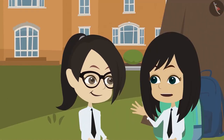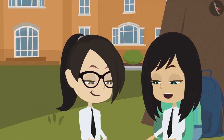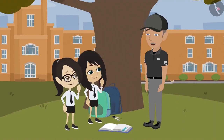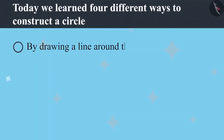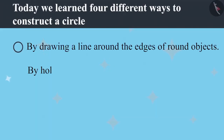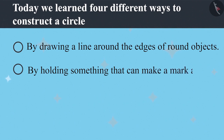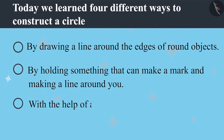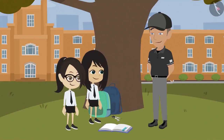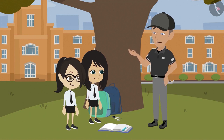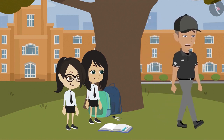Now we know four methods to draw a circle: first, by tracing the edge of round objects; second, by holding something that can make a mark and making a line around yourself; third, with the help of nail and thread; and fourth, by using a compass. The teacher and student then head off to their respective classes.